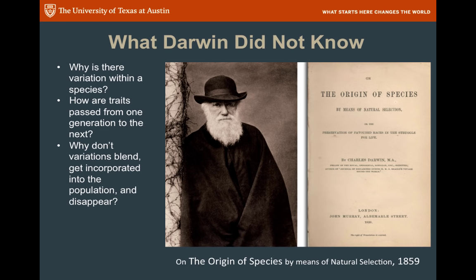What did Darwin not know? Darwin published On the Origin of Species by Means of Natural Selection in 1859. He understood natural selection, but he didn't know why species varied to begin with, why there was variation among individuals, how traits were passed from one generation to the next, or why variations don't just blend. The answers came later with the study of genetics and DNA.